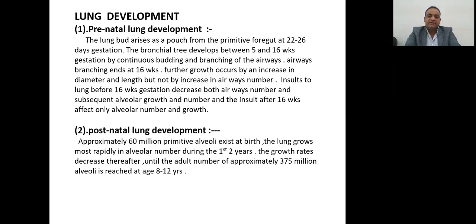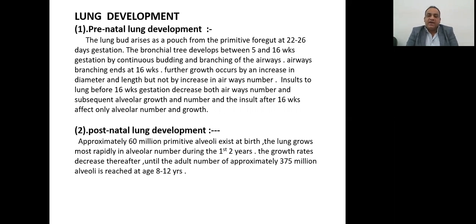The growth rate decreases after the early years until the adult number of approximately 375 million alveoli is reached at age 8 to 12 years. So the number of alveoli and the development of the lung will be completed at age 8 to 12 years.